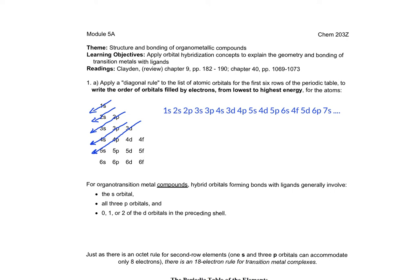With organotransition metal compounds involving the d orbitals, the hybrid orbitals generally involve not only the s orbital and the p orbitals, but may also involve one or two of the d orbitals in the shell above it.